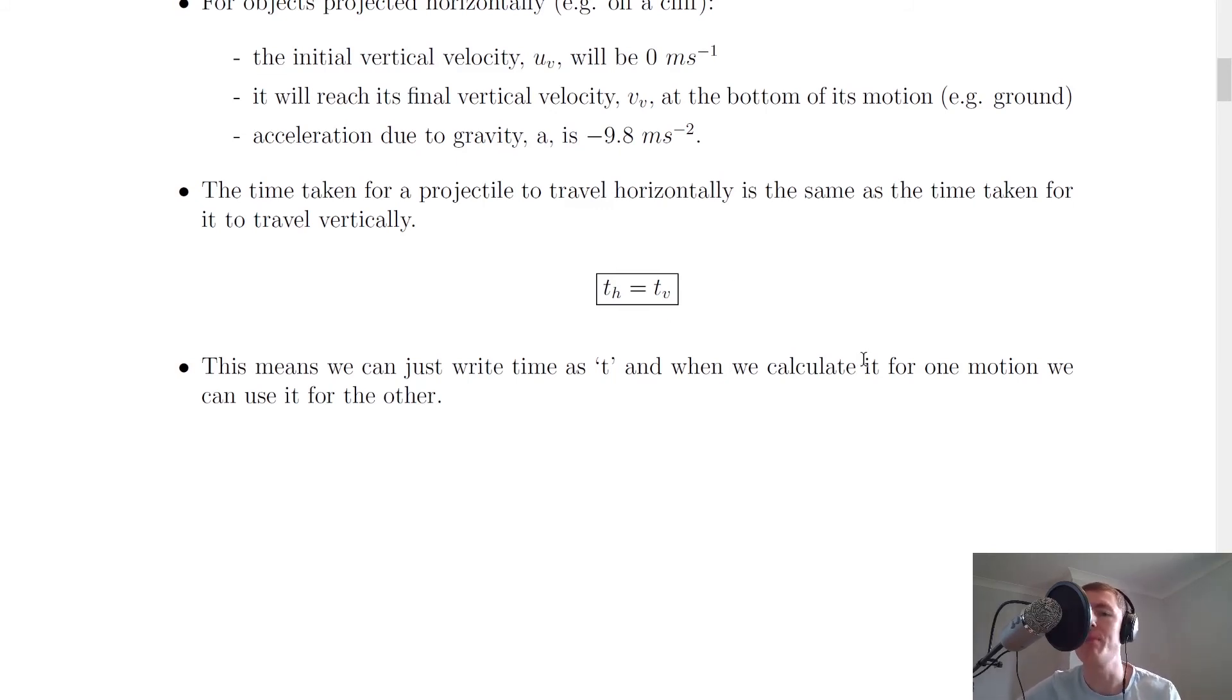Just to remind you of this idea of the time being the same for horizontal and vertical motion, I'm going to show you another animation. Let's say we have a cannon which can fire two cannonballs at the exact same time, and in this case they're going to be fired at 10 metres per second horizontally.